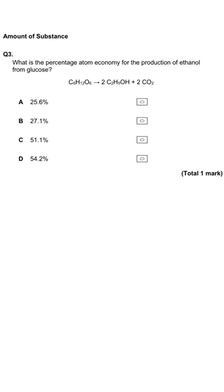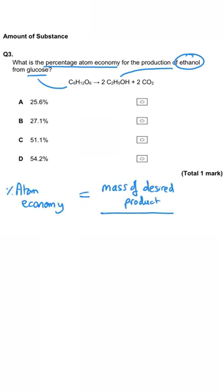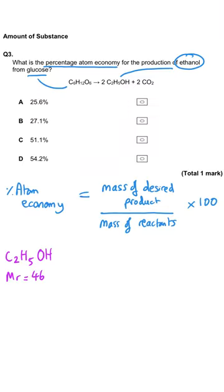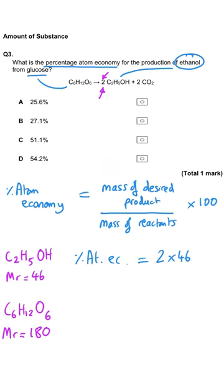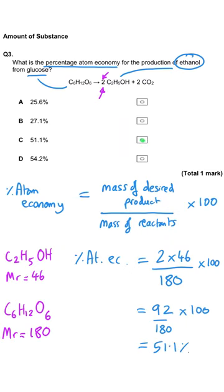This question asks about percentage atom economy for the production of ethanol from glucose. Atom economy is the total mass of target product divided by the total mass of reactants, multiplied by 100. Ethanol has an MR of 46, but there are two molecules in the products, so we use 92. The MR of glucose is 180 (6×12 + 12×1 + 6×16). So 92 divided by 180 times 100 gives 51.1%, making C the correct answer.